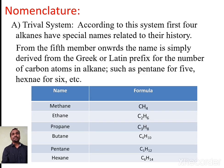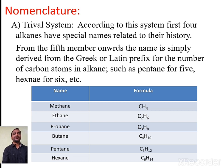The next important topic from this chapter is nomenclature. There are a number of alkanes possible, and most occur in nature. Different systems exist for assigning names to alkanes. The first ancient system is called the trivial system. According to this system, the first four alkanes have special names related to their history of occurrence. From the fifth member onwards, the name is derived from the Greek or Latin prefix for the number of carbon atoms — pentane for 5, hexane for 6, and so on.